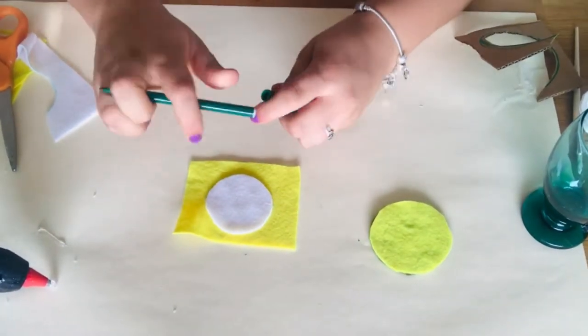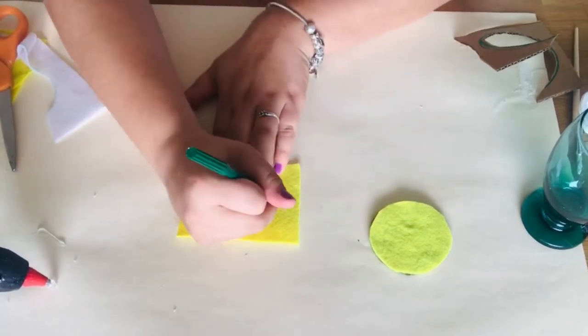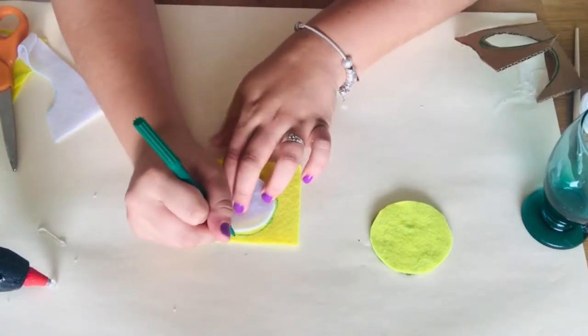And then take your white circle and you're going to place it on top of your second piece of yellow felt and trace it.